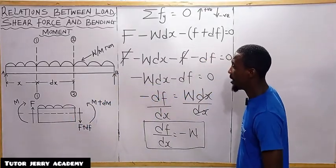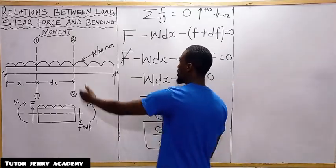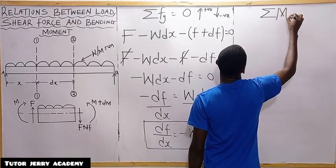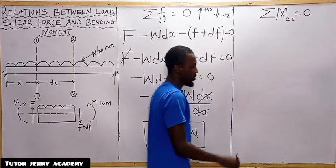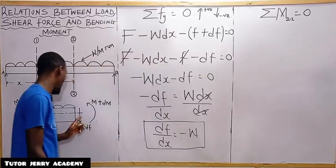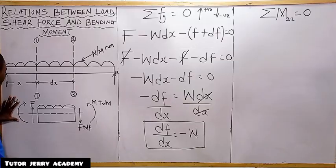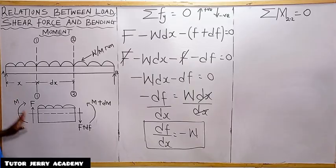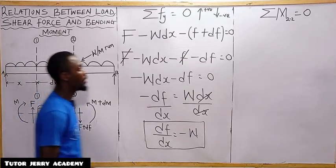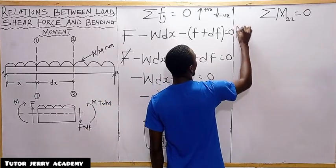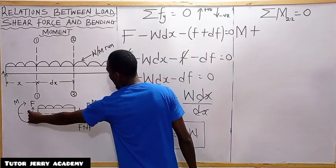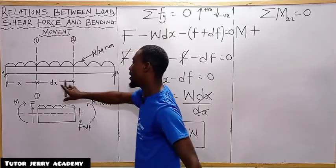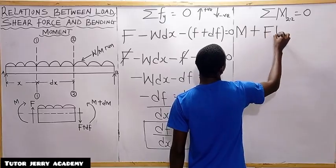For the second relationship, we take moments about section 2, setting the summation of moments equal to zero. Taking the moment M as positive, the upward force F multiplied by the distance ds gives a positive contribution: M plus F·ds. The uniform distributed load converted to a point load gives minus W·ds multiplied by ds/2.